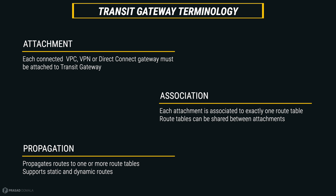And finally, we have propagation, which is basically route propagation to the route table. We can configure our attachments to propagate routes to one or more route tables. So when we attach a VPC or VPN to the Transit Gateway, the routes can be configured to propagate automatically to your route tables. Both static and dynamic route tables are supported in Transit Gateways.